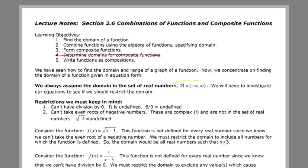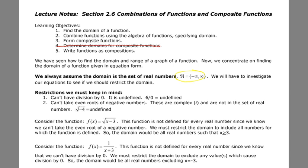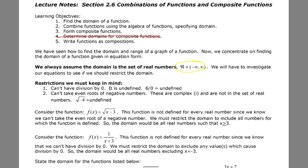The first thing is, we will always assume the domain is the set of real numbers, which means division by zero can't happen, square roots of negative numbers can't happen, so we always start with our assumption. Then we'll have to investigate our equations to see if we need to restrict that domain. The two restrictions we work with in the set of real numbers at this point is we can't have division by zero, and we can't take even roots of negative numbers. Division by zero is undefined, and we're not dealing with the complex number system, so that's undefined as well.